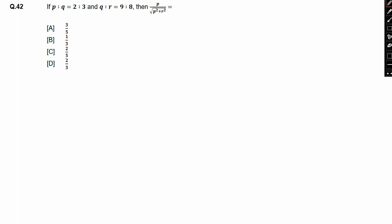If p is to q is 2 by 3 and if q is to r is 9 by 8, then we will find the value of the expression p by root under p square plus r square.